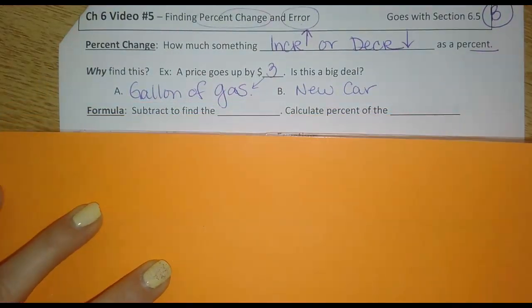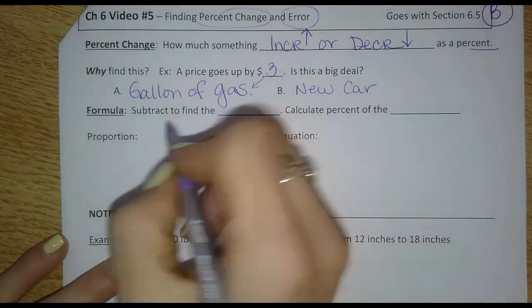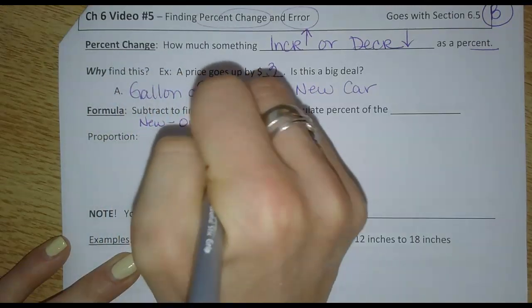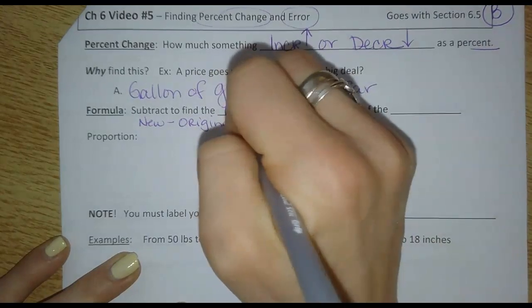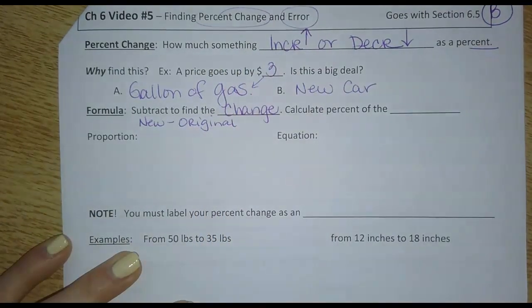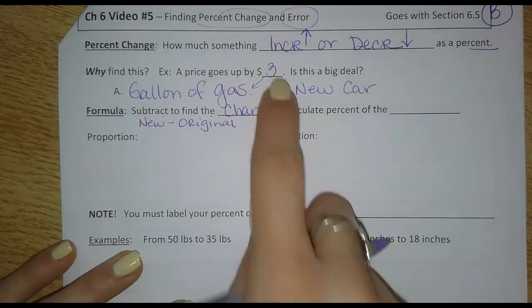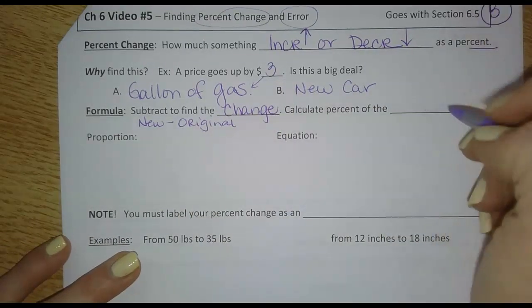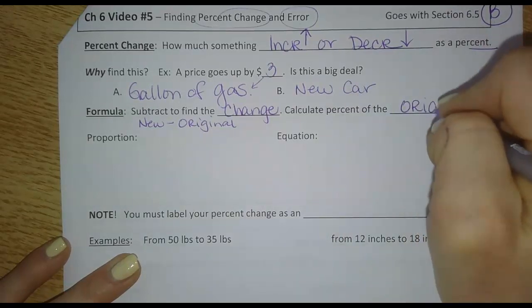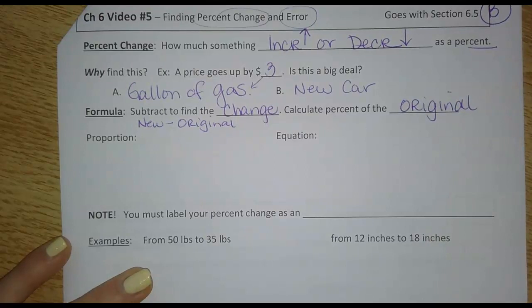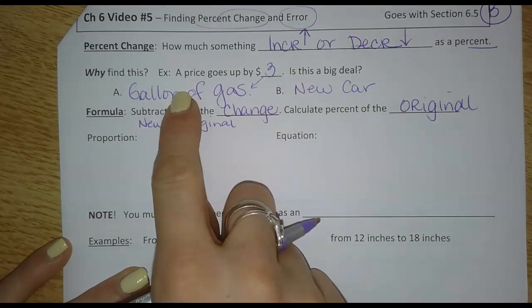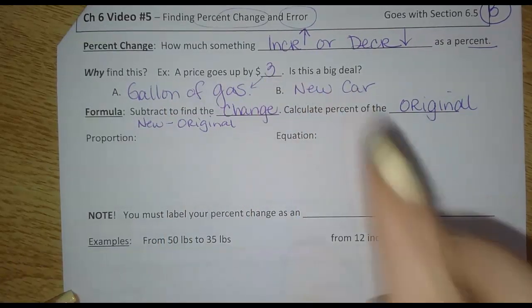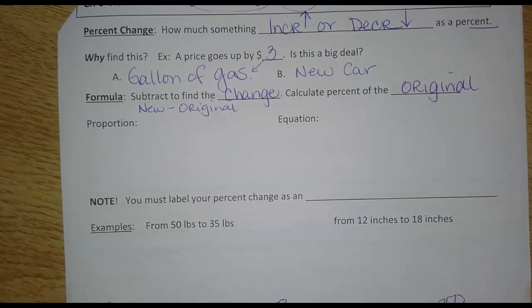So the way to find percent change is to subtract. I'm going to write this here: new minus original. Subtract those to find how much it changed. For example, here they just told us it changed $3, but we would have to calculate that, subtract and figure out, it went up this much or it went down this much. And then calculate what that is as a percent of the original.